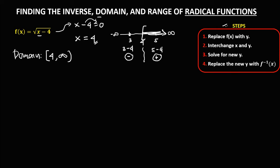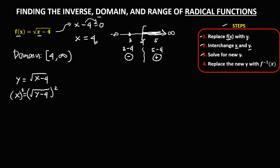To find the inverse using the steps: first, replace f(x) with y, so f(x) becomes y equals square root of x minus 4. Then interchange x and y, so y becomes x and x becomes y. Then solve for the new y — to eliminate the radical, take the square of both sides. So this becomes x squared equals y minus 4.